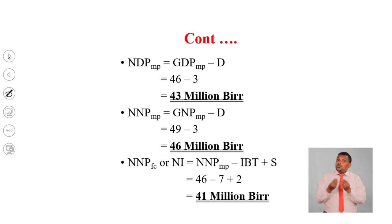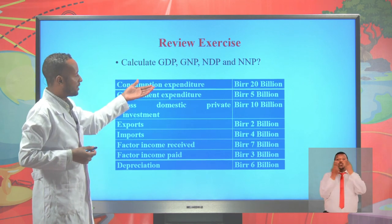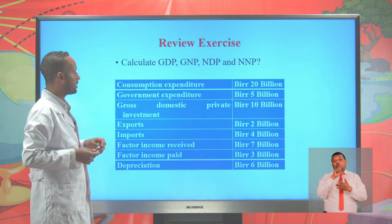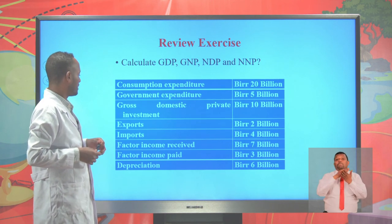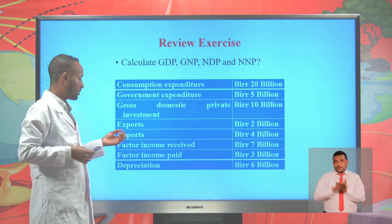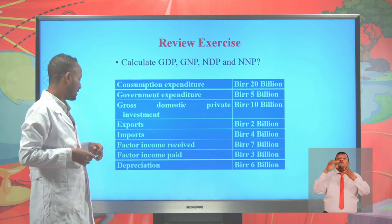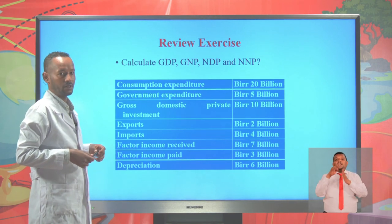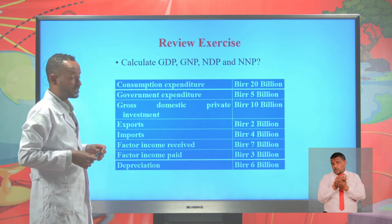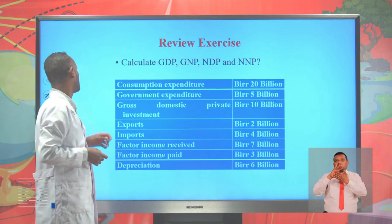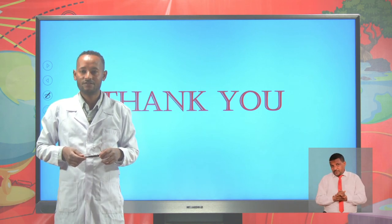Students, now let me give you a review exercise using the following information: consumption expenditure is $20 billion, government expenditure is $5 billion, gross domestic private investment is $10 billion, export is $2 billion, import is $4 billion, factor income received is $7 billion, factor income paid is $3 billion, and depreciation is $6 billion. Using this information, calculate the gross domestic product, the gross national product, the net domestic product, and the net national product. This is all about Unit 7 revision lesson. Stay safe, stay home. Thank you.